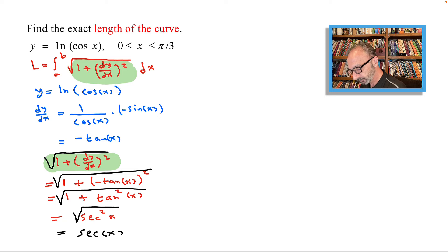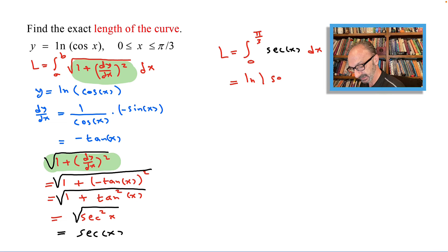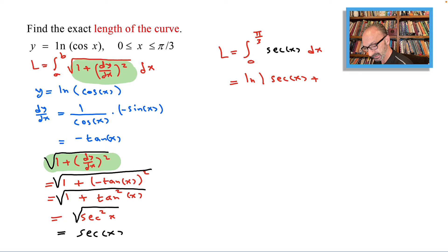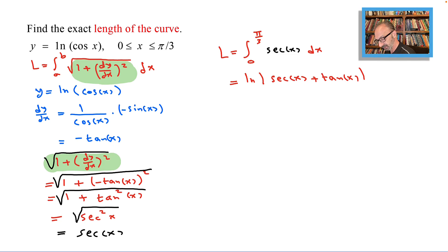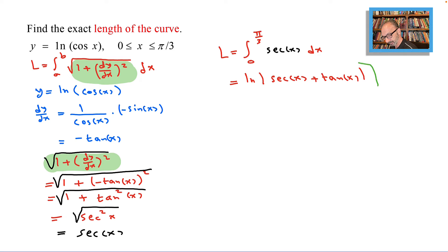So now the length is from a to b, where a is 0 and b is pi over 3, and the square root inside simplifies to secant x dx. The integration of secant is ln of secant x plus tan x.